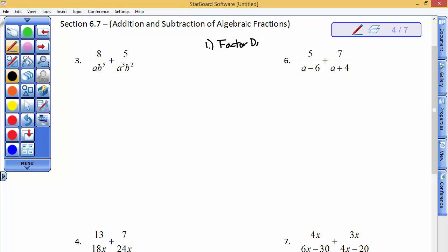Well, this particular problem can't be factored in the denominator, so it's 1 times a minus 6 and 1 times a plus 4. Your second step is to find the least common denominator.